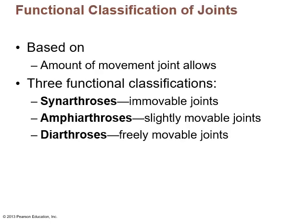The functional classification of joints is based on the amount of movement that the joint allows, and there are three functional classifications. To me it's all very SAD — S-A-D. Synarthroses are immovable joints, amphiarthroses are slightly movable joints, and diarthroses are freely movable joints.